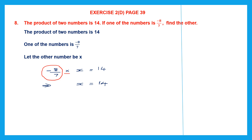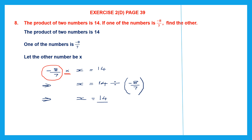The operation here is multiplication. So when it goes to the other side, the operation changes to division, and we divide by minus 8 by 7. So now we're going to find the value of x. This is division, so first let's write 14 by 1. Division will change to multiplication and minus 8 by 7 we will write the reciprocal, so that becomes 7 by minus 8.